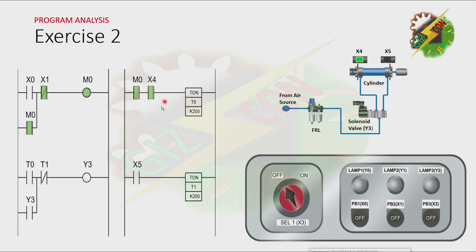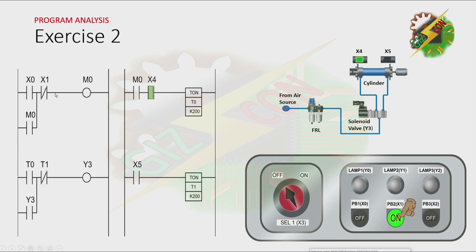Because the cylinder is at fully retracted position, T0 will turn on again. And the cycle will repeat. The only way to stop the cycle is by turning off M0. And to turn off M0, we need to press PB2, or X1. Now let's have our simulation.